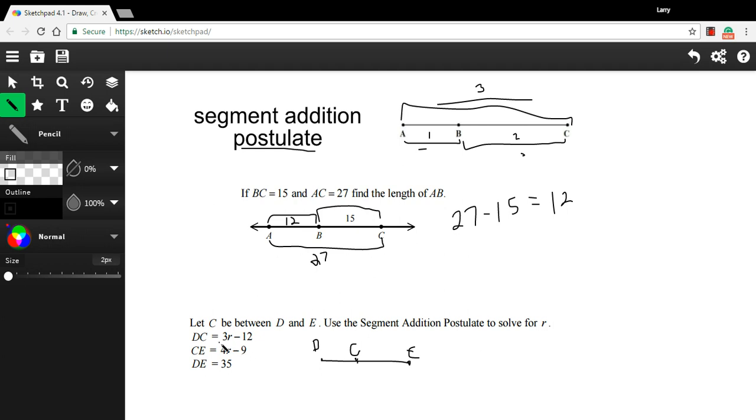Use the segment addition postulate to solve for r. They're telling us that DC is 3r minus 12, so that's this length right here and I'll just write that in: 3r minus 12. And CE is 4r minus 9, so that's this chunk right here: 4r minus 9. And then it says DE, oh that's the whole thing from D to E, is 35.